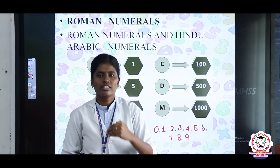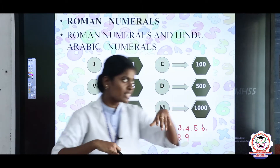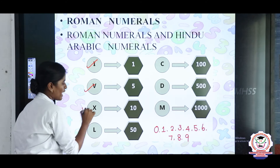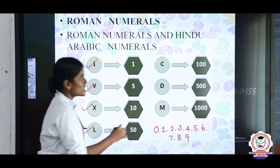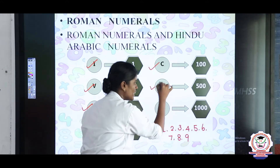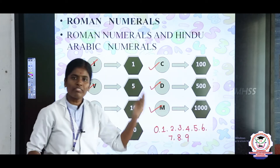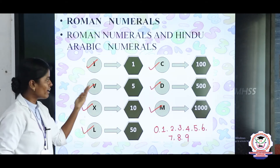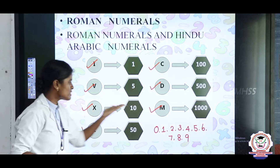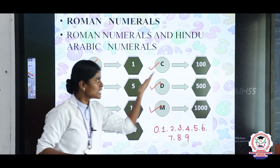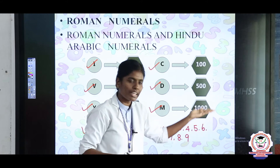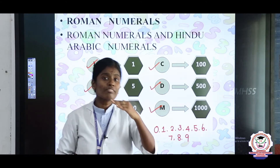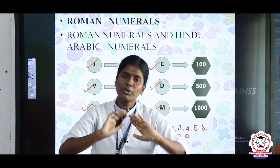But in the Roman numeration system, we have only 7 symbols: I, V, X, L, C, D, M. I represents 1, V is 5, X is 10, L is 50, C is 100, D is 500, and finally M is 1000. We use these 7 symbols to write all Roman numerals.